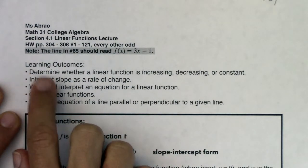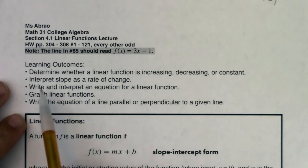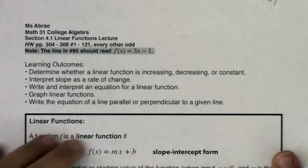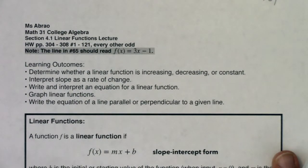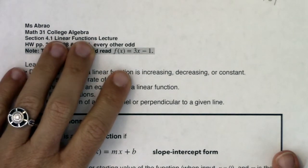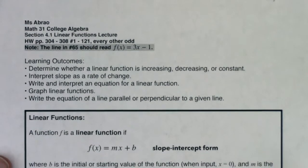So what are our learning outcomes? For linear functions we want to determine whether a linear function is increasing, decreasing, or constant. We want to interpret the slope as a rate of change, and we've already done this before but it's great to review it. We'll write and interpret an equation for a linear function. We'll graph some linear functions and we'll write equations of lines parallel and perpendicular to a given line.